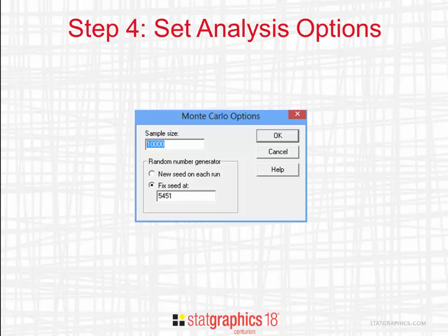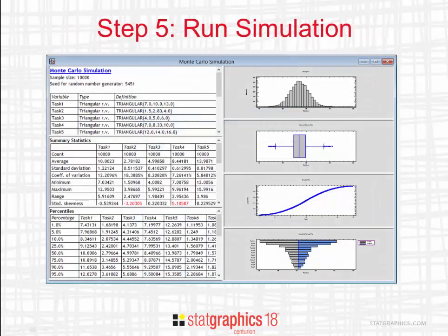On the Analysis Options dialog box, I'll set the number of samples I wish to create. In this case, I'm going to ask for 10,000 samples. I can also set the seed to an integer in order to get the same results more than once. Otherwise, if you pick a new seed on each run, every time you run the simulation you'll get different results. When I press the OK button, the simulation will start. When it's done, I'll see a lot of information, both numerical and graphical.